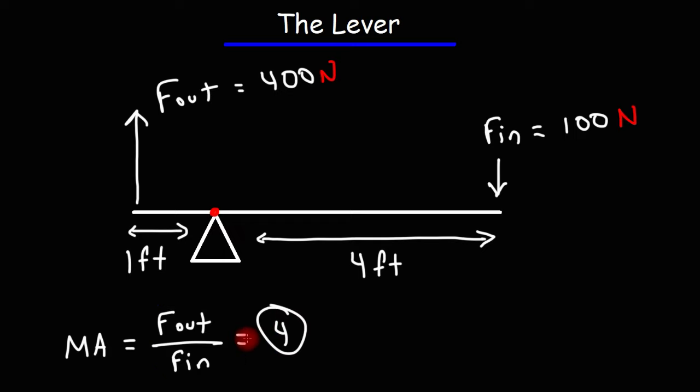This means that using this simple machine, we can multiply the input force by a factor of 4. That's the advantage of simple machines - they allow you to do the same work with less effort.